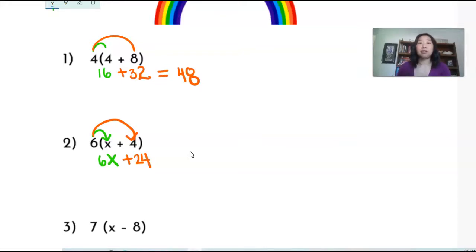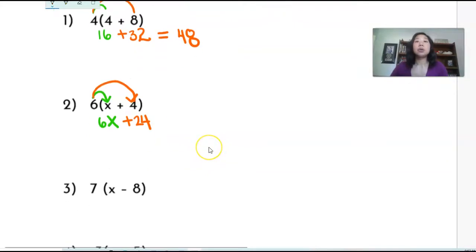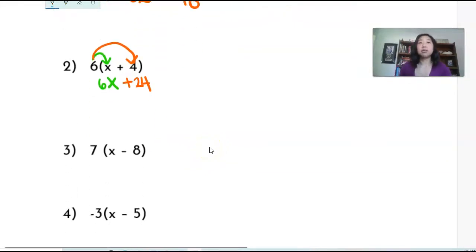And so since I cannot simplify this any further, I am going to leave it like that: 6x plus 24.